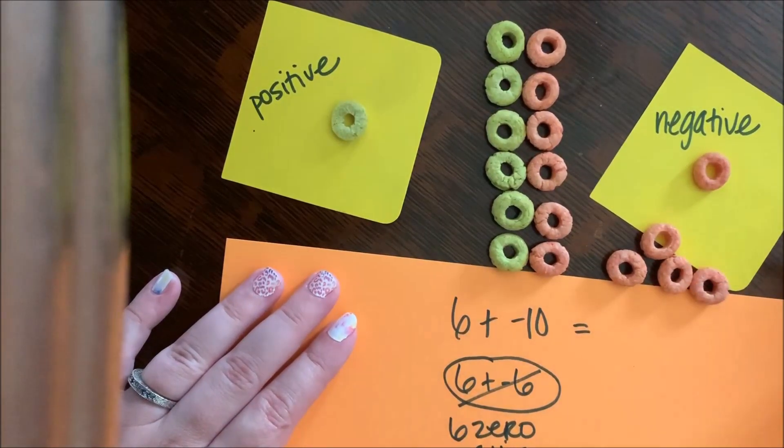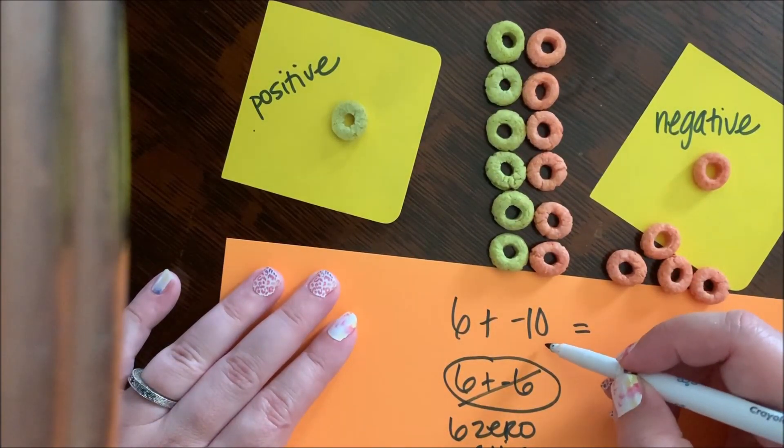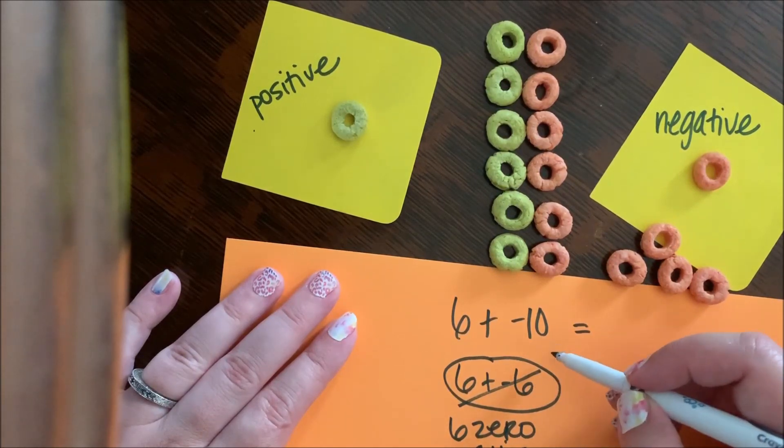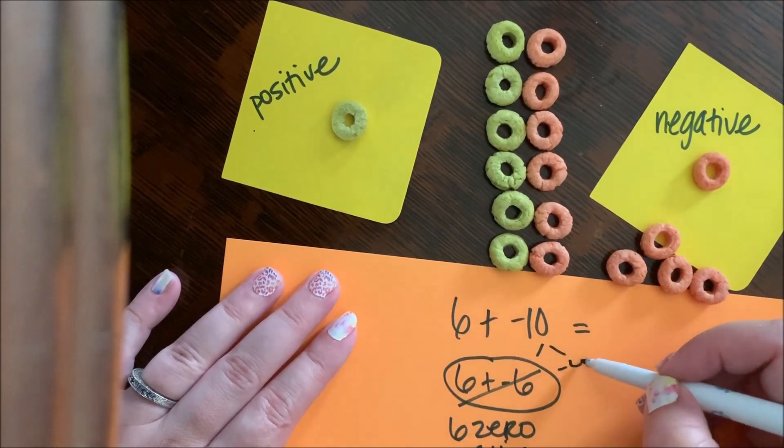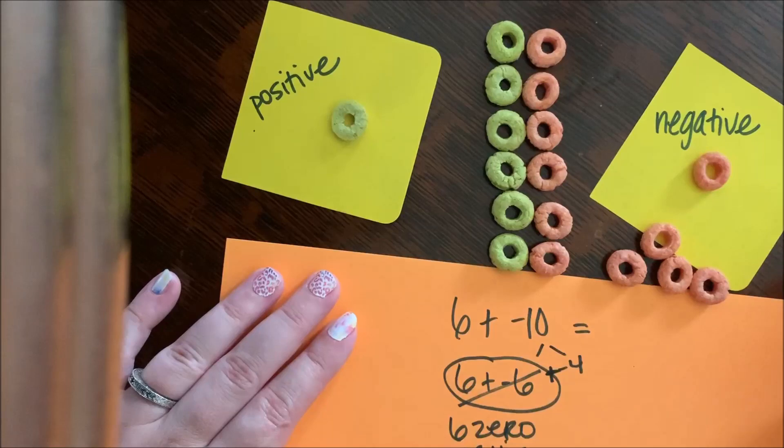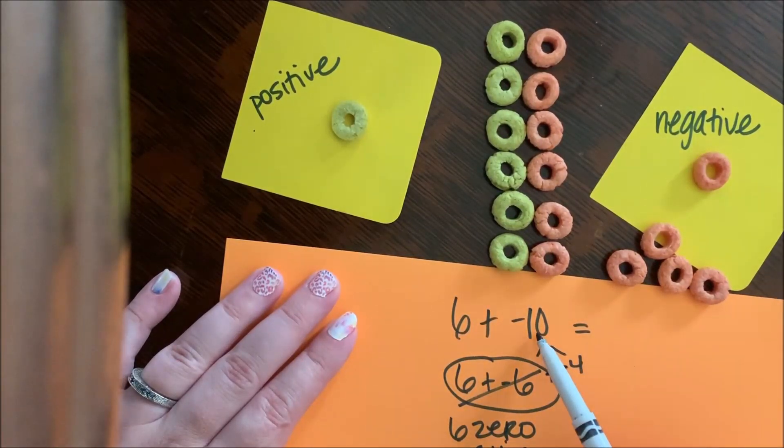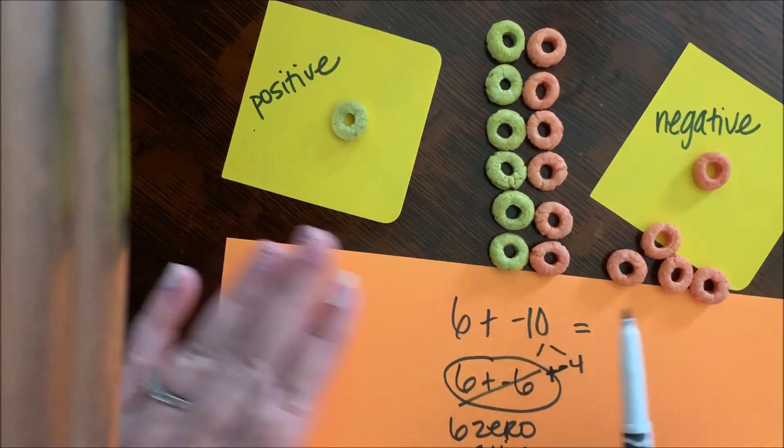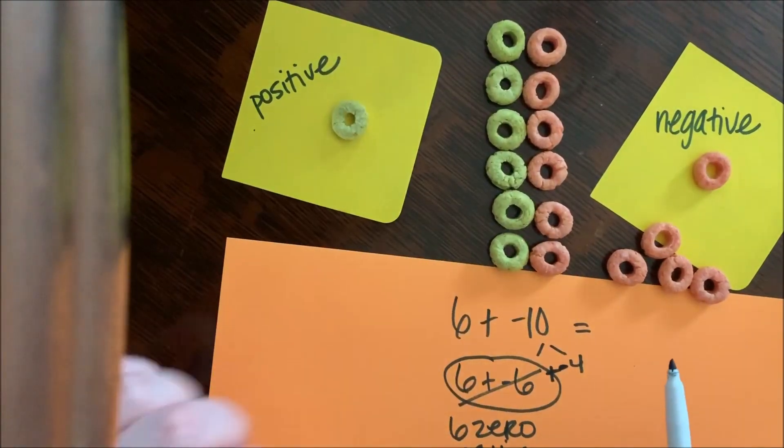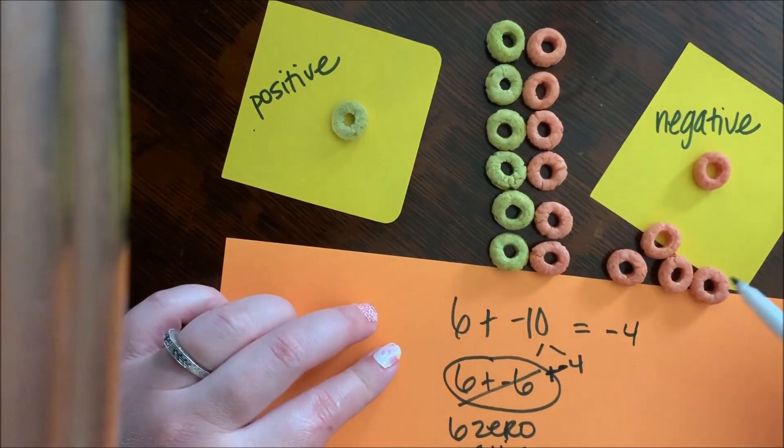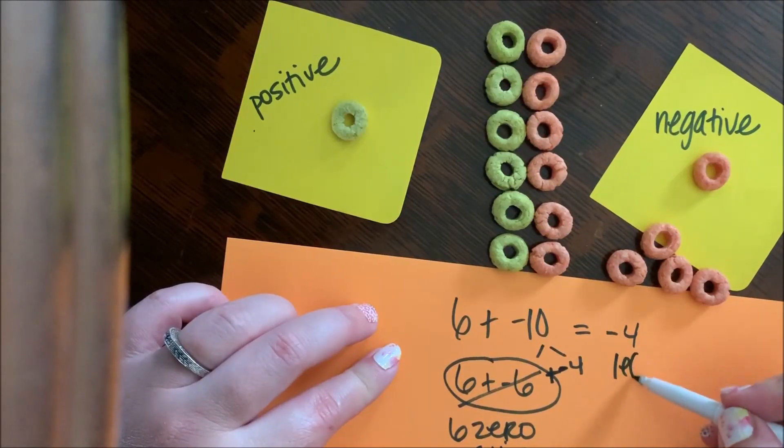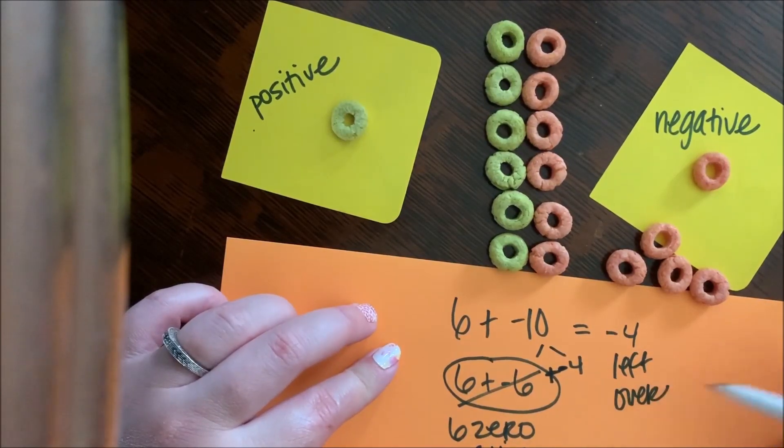And I have these four negatives left over because negative ten is made up of negative six and negative four. So when I look at this six plus negative ten, I have six zero pairs and negative four left over.